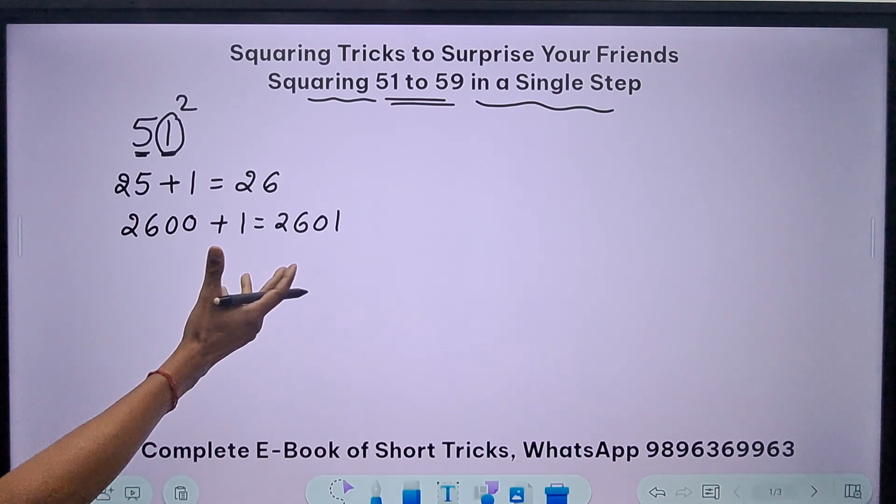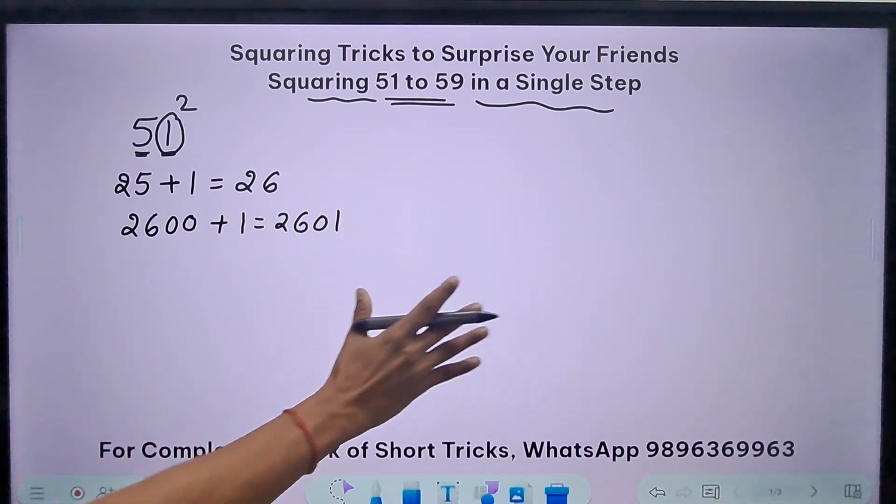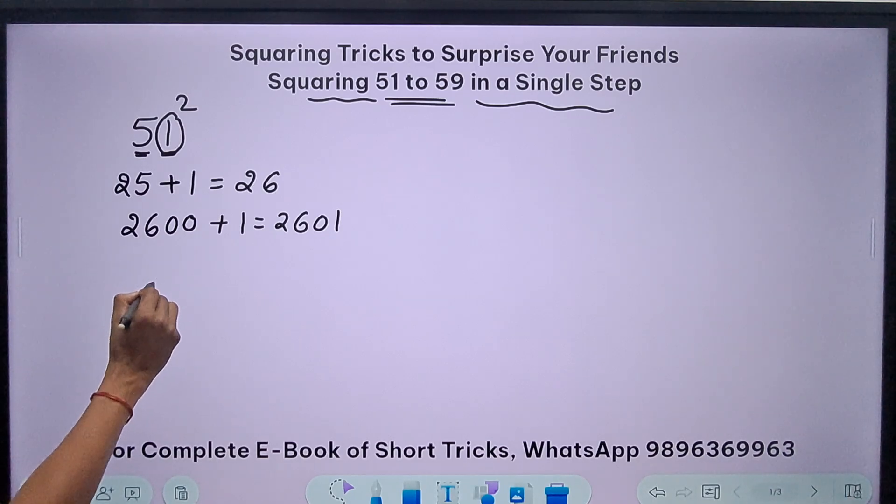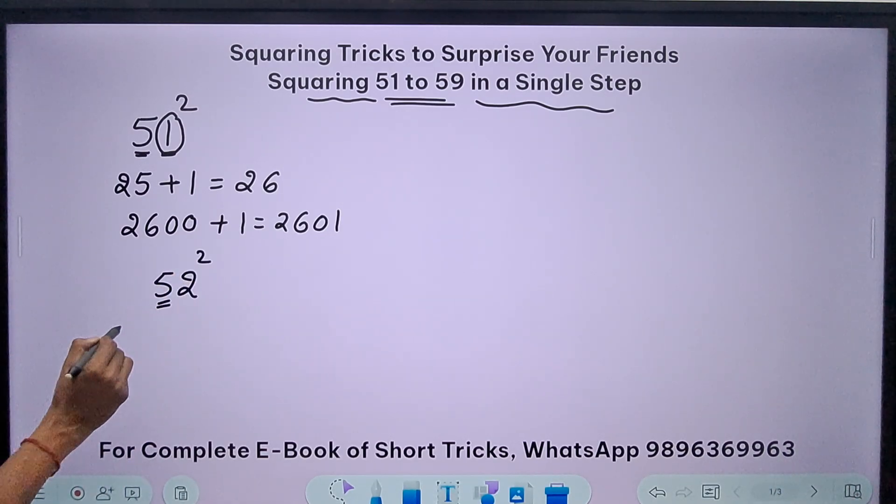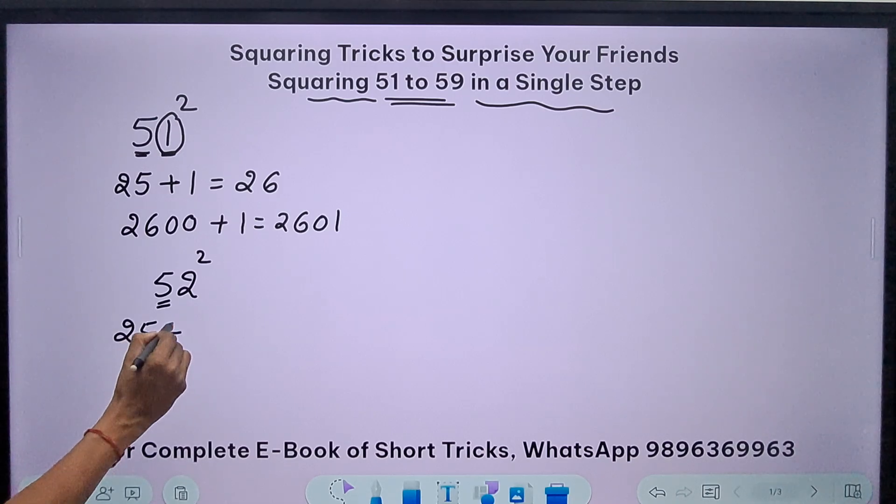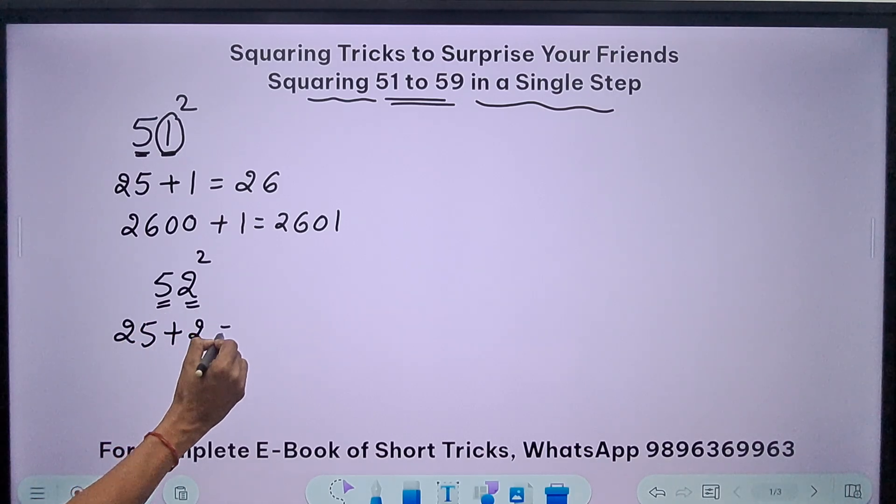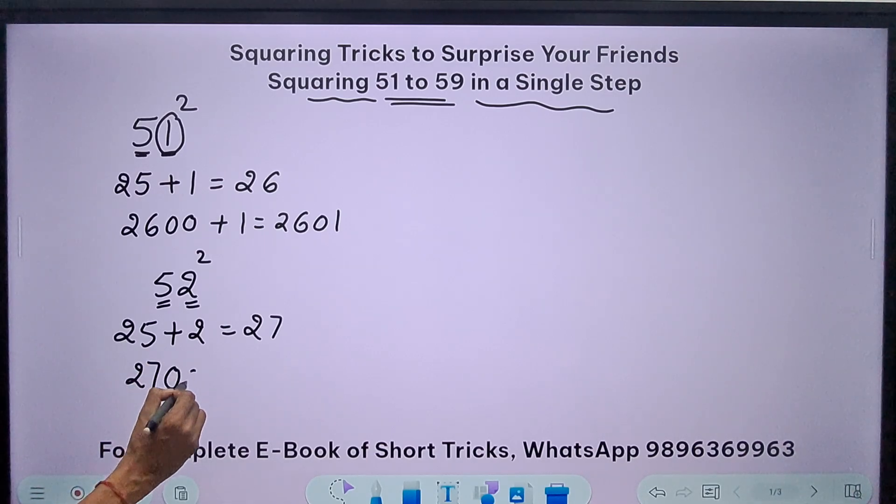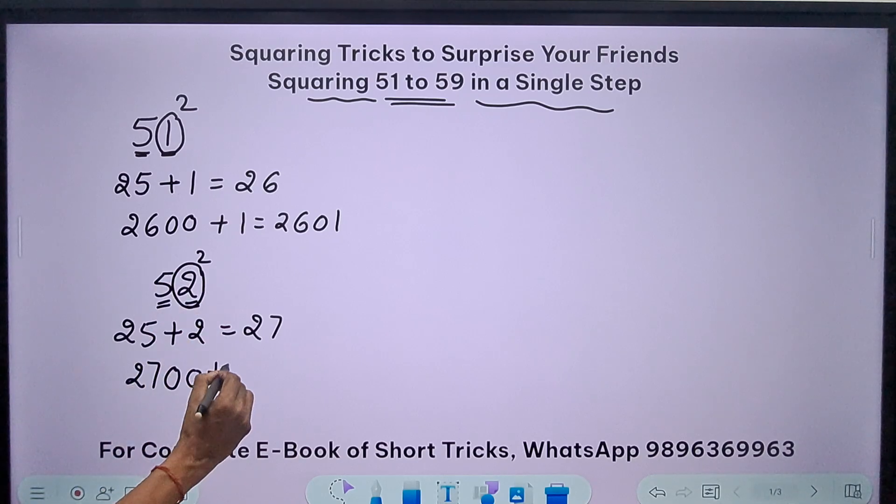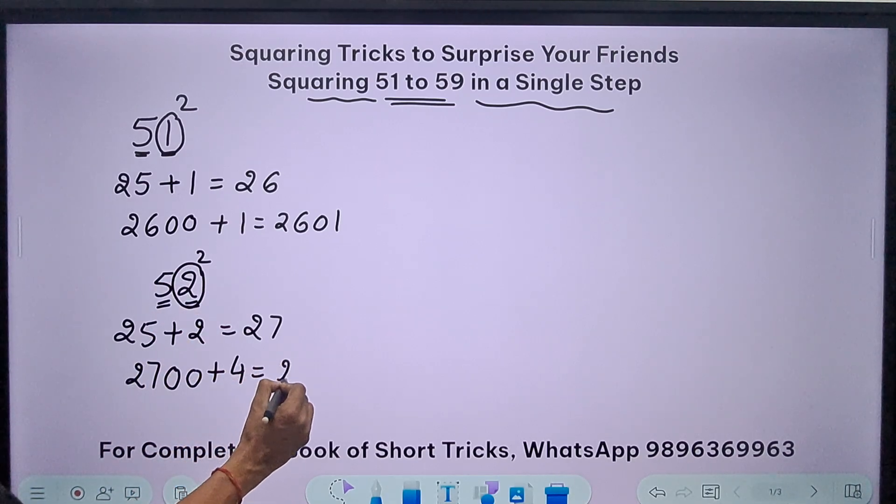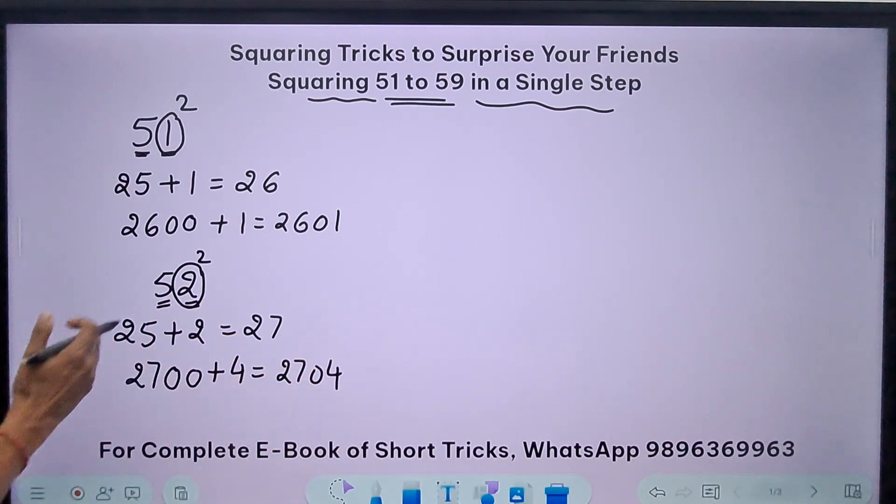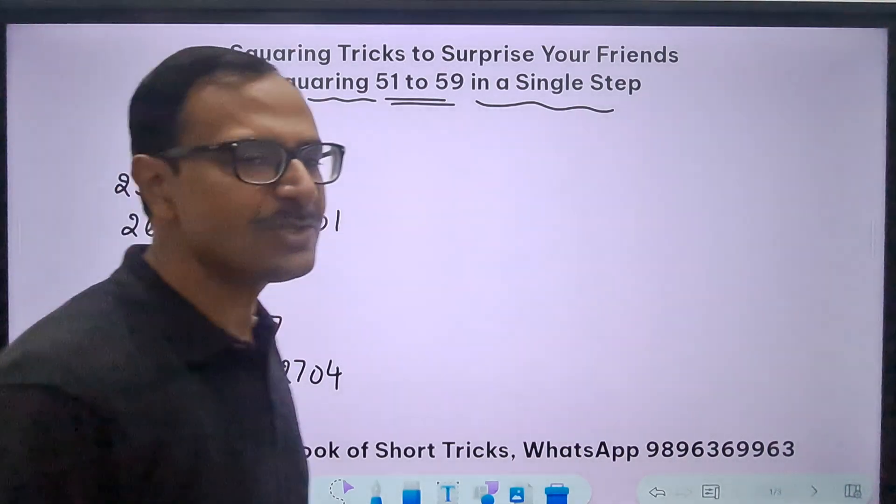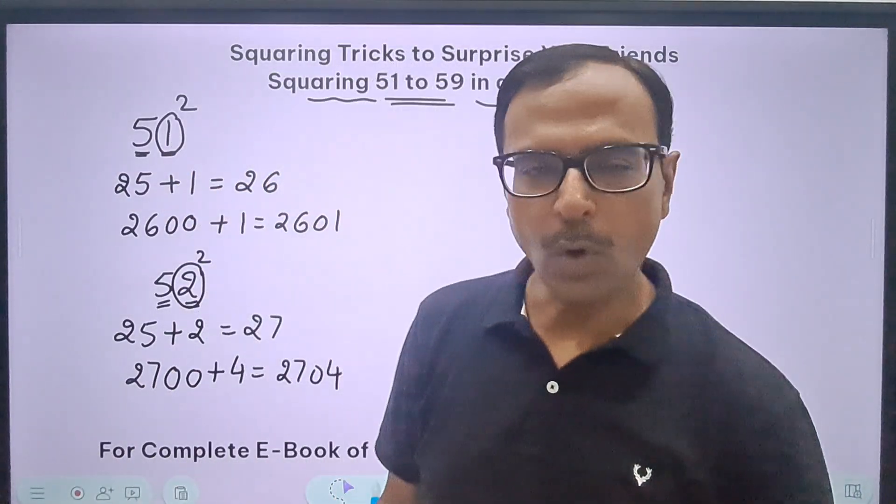Let's take the next number in the series: 52 square. Again, 5 square is 25, add 2 to this you get 27. Now 27 is to be multiplied by 100, so you get 2700, and add the square of this number, 4. That is 2704, the square of 52.